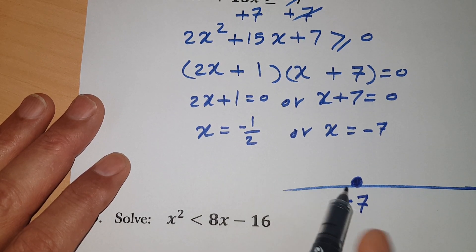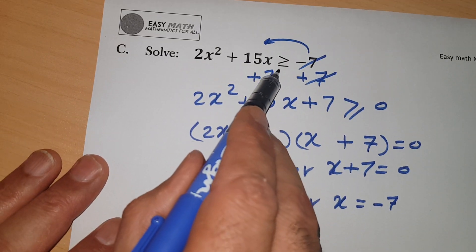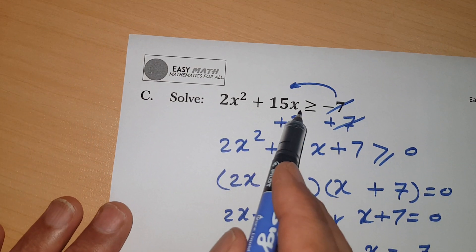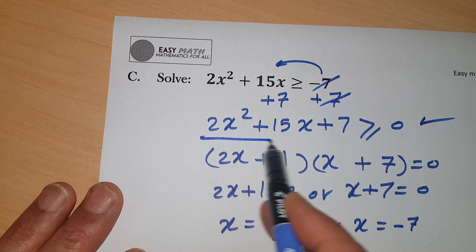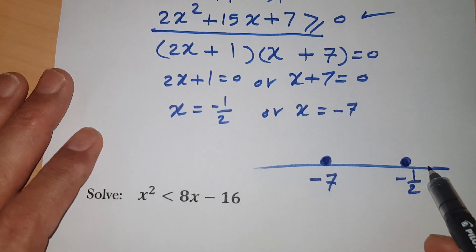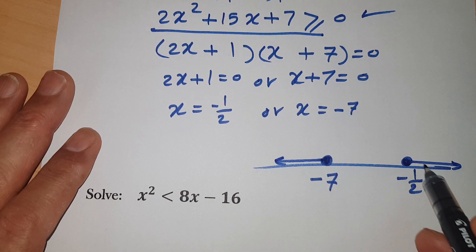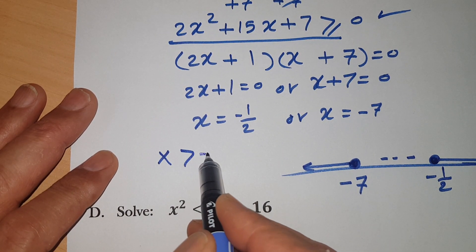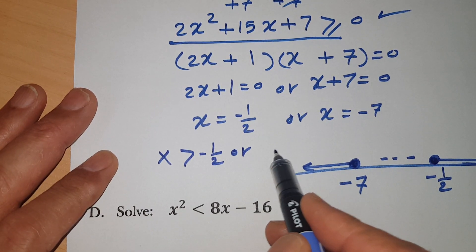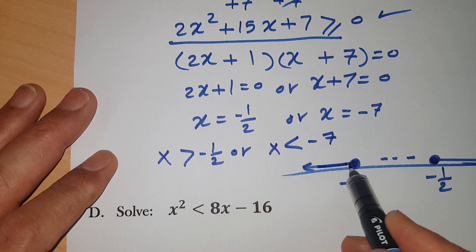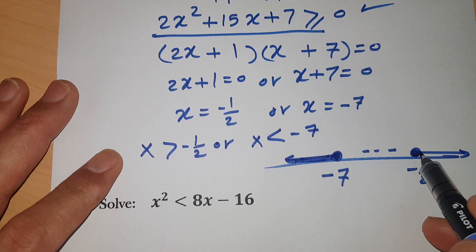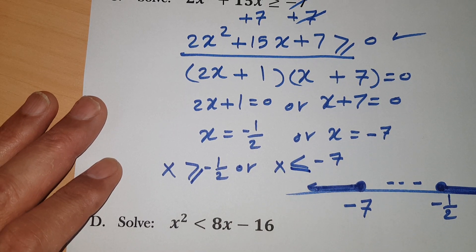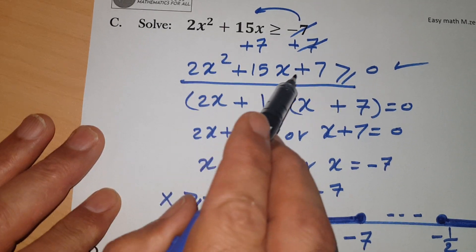Draw a number line with -7 to the left and -½ to the right, both with closed circles since the inequality is ≥. I want the function to be bigger than zero — as shown, the function is positive in the outer parts. So the solution is x ≥ -½ or x ≤ -7. Don't forget to include the equal sign because the inequality is ≥.